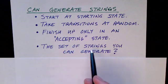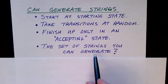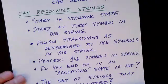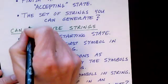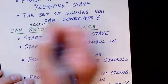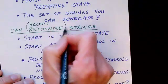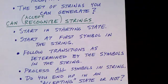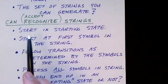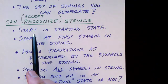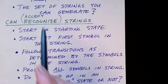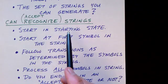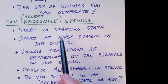We can ask: what is the set of all strings that a particular finite state machine can generate? The other way we can use a finite state machine is to recognize or accept strings. Here the idea is that you're given a string of symbols made up of symbols from the alphabet, and you want to know whether to accept or reject that string. So you take your finite state machine and you start in the starting state.